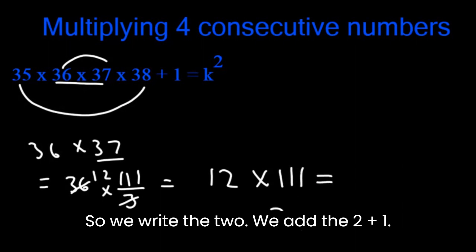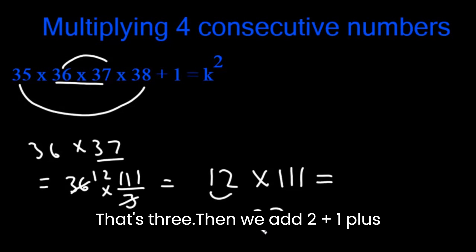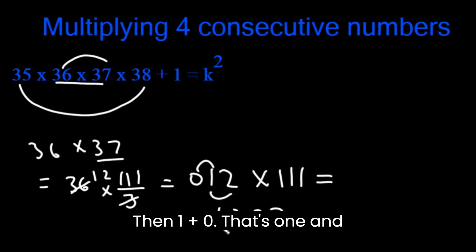So we write the 2. We add the 2 plus 1, that's 3. Then we add 2 plus 1 plus the imaginary 0, that's also 3. Then 1 plus 0, that's 1 and 0. So we have 1332.